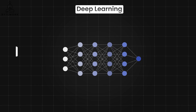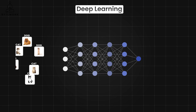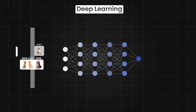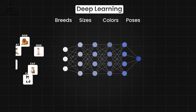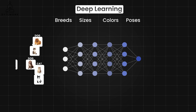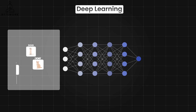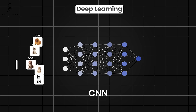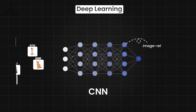Imagine you work at an animal shelter and want to automate a system to categorize incoming images of animals. Here is how supervised deep learning can help. Say you have thousands of pictures of cats and dogs — our unstructured data — and you'd want a diverse set of images including different breeds, sizes, colors, and poses to make the model robust. Each image would be meticulously labeled as 'cat' or 'dog,' which is crucial for supervised learning. When training the model, we might resize images for consistency and adjust color balance for uniformity. We design a convolutional neural network, or CNN, architecture — a powerful type of deep learning architecture designed for image-related tasks.